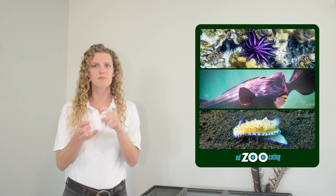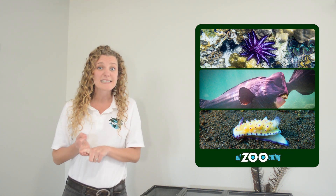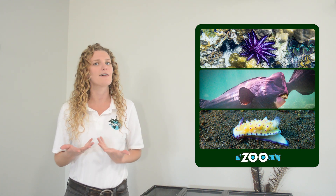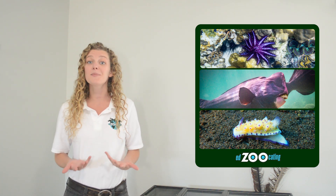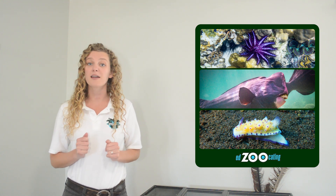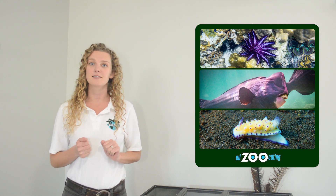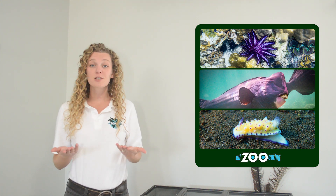While coral reefs do provide hunting grounds for predators like sharks and sea snakes, coral reefs do have a couple of predators of their own. Crown of thorns sea stars, parrot fish, some sea slugs, and other animals feed on corals and the algae that grows on them as a main part of their diet. And even though there are a few predators that like to eat coral, predators are not their greatest threat.